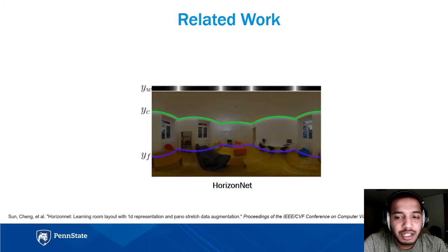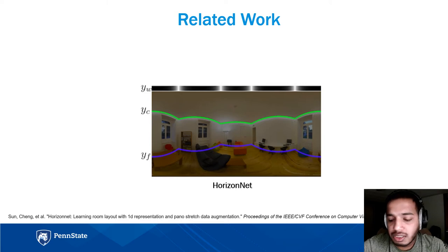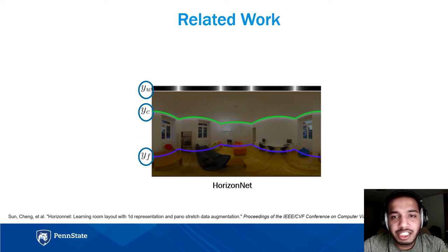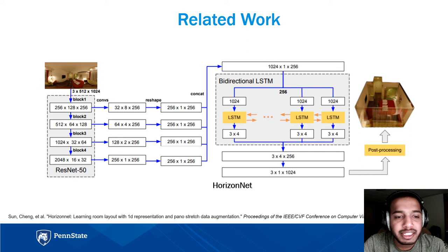Our work is based on HorizonNet, which presented a new approach to estimating the 3D room layout from a single panoramic image. HorizonNet represented room layout as three 1D vectors encoding the existence of wall-wall boundaries, and the boundary positions of ceiling-wall and floor-wall. The proposed HorizonNet, trained for predicting 1D layout, outperforms previous state-of-the-art approaches. However, it uses standard convolution networks — specifically ResNet-50 for predicting corners and boundaries — followed by post-processing to generate the 3D layout.